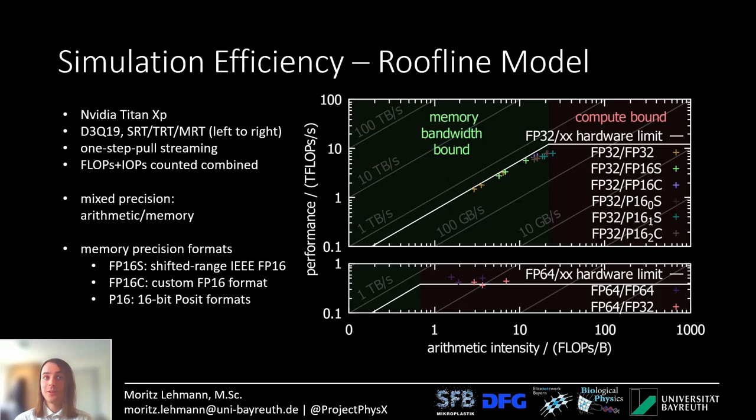Let's talk efficiency. This is the roofline model for the NVIDIA Titan XP GPU. On the y-axis I plot the floating point performance in teraflops per second, and on the x-axis a quantity called arithmetic intensity. From the OpenCL code I generate the PTX assembly, and with a profiler I measure how many floating point operations and how many bytes of memory transfer are in the kernel.